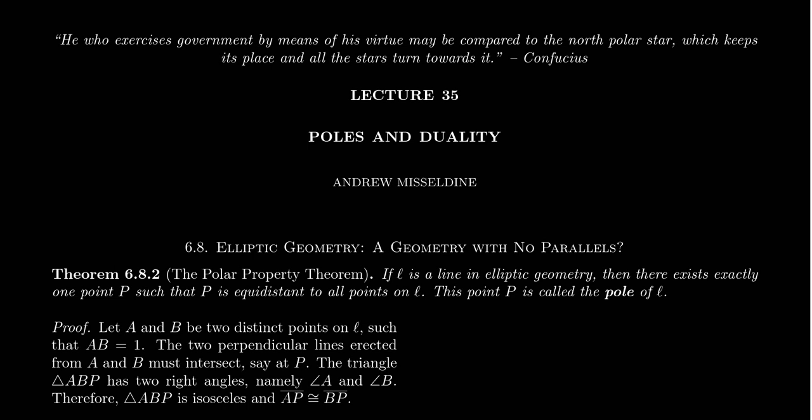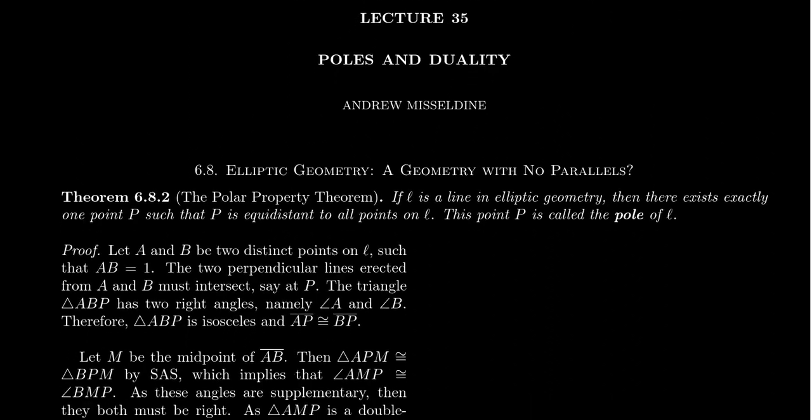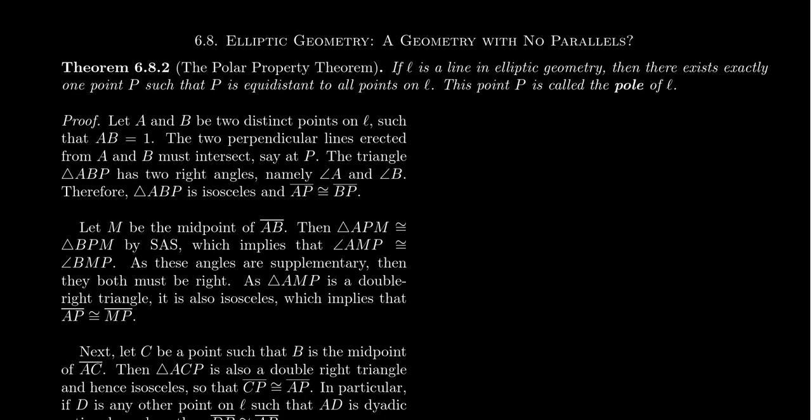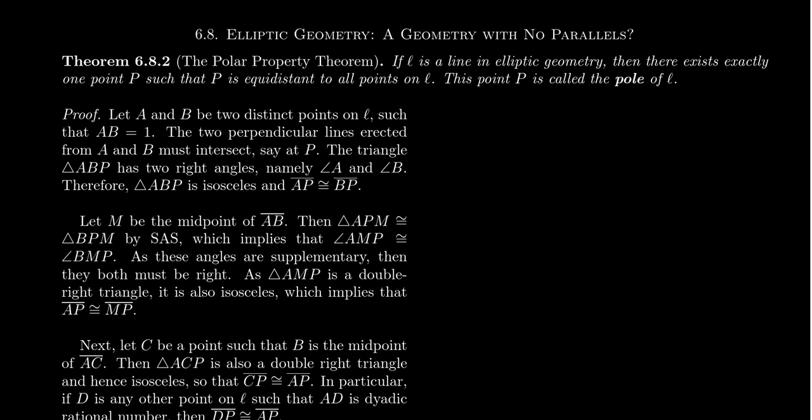The polar property is the way of measuring this notion of duality, which we'll explain more in the second portion. We're at lecture 35 with only a few more lectures in this course. As we're talking about elliptic geometry, I want to focus on things that are uniquely elliptic. We spent a lot of the semester developing neutral geometry, and briefly covered Euclidean and hyperbolic geometries. The polar property is a nice notion to show what is uniquely elliptic.